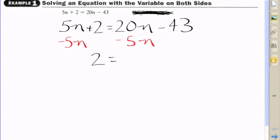So what you want to do is add the opposite of that term. So subtract 5n on both sides, essentially. You eliminate that 5n on the left side. You're left with 2 equals 15n minus 43.